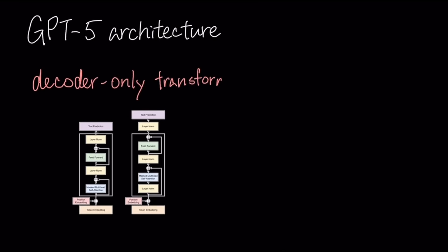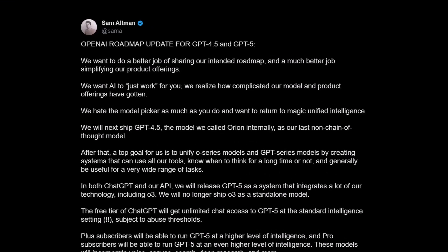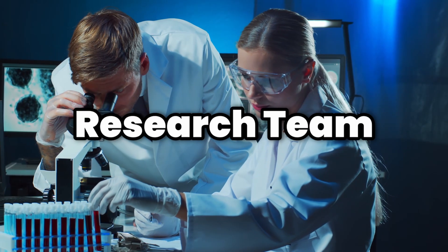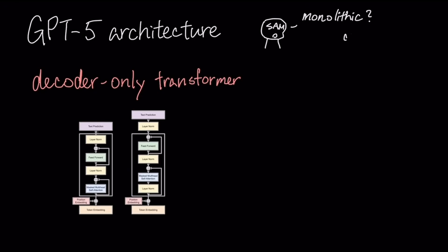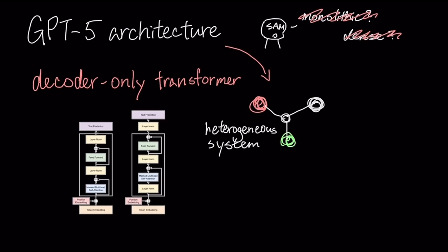The foundational architecture of GPT-5 is still the decoder-only transformer. However, tweets from Sam Altman and OpenAI's research team indicate it won't be a monolithic dense model. The merge they've described points to a heterogeneous system design, likely an evolution of the multi-modality we saw in GPT-4-0.